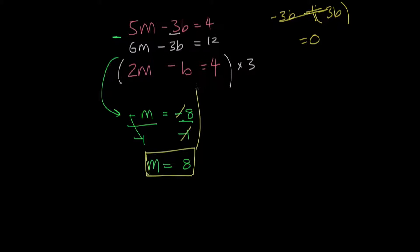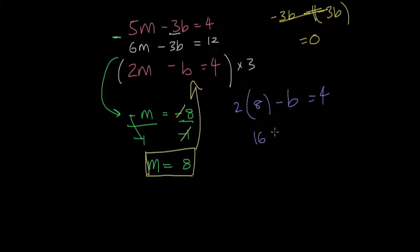Now if I choose to go with the second equation, I'm going to get 2 times m, which is 8, minus b — so that's what we're trying to solve for — equals 4. 8 times 2 is 16, minus b equals 4. Now I want to get b by itself on this side of the equation, so I'm going to subtract 16 from both sides of the equation. That cancels out, so I get negative b equals negative 12.